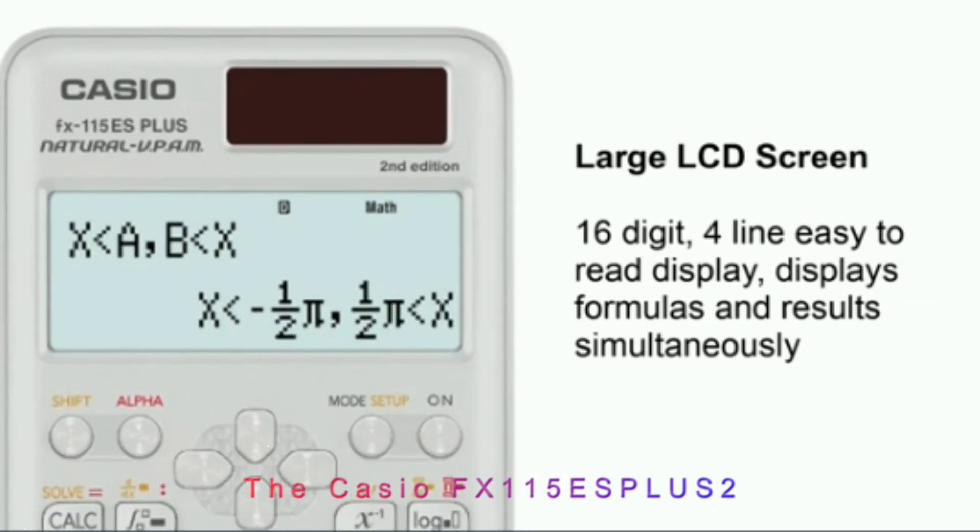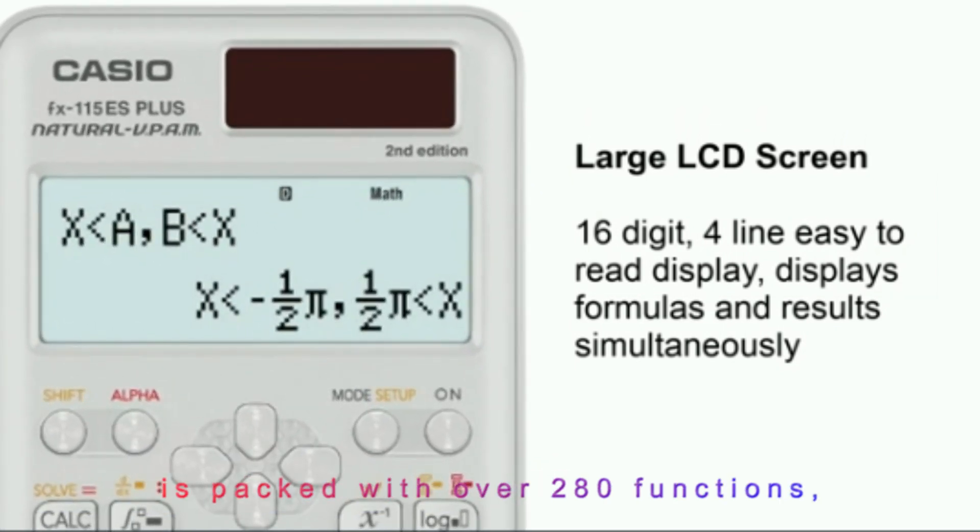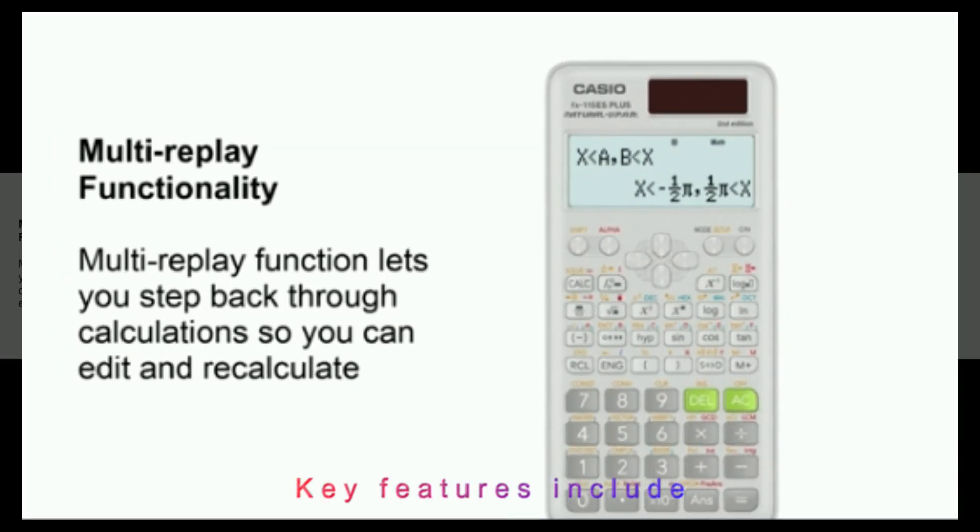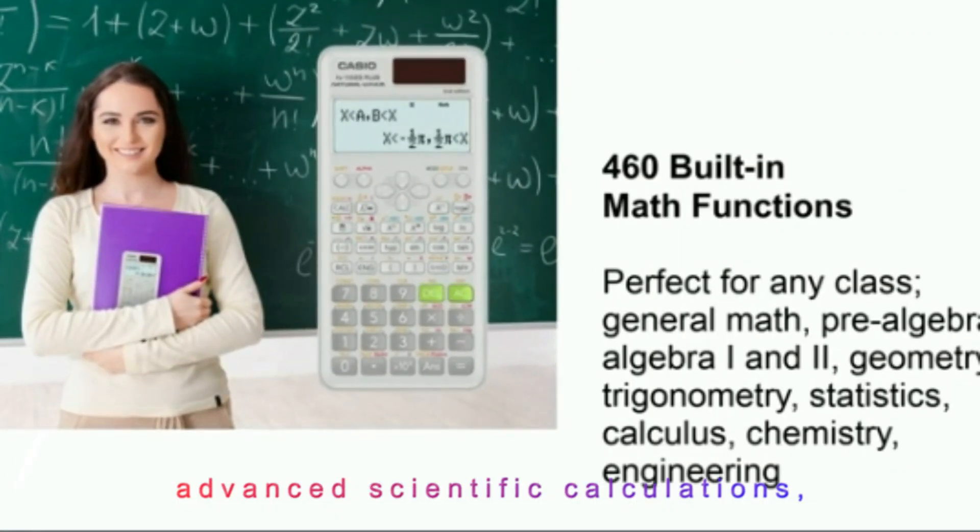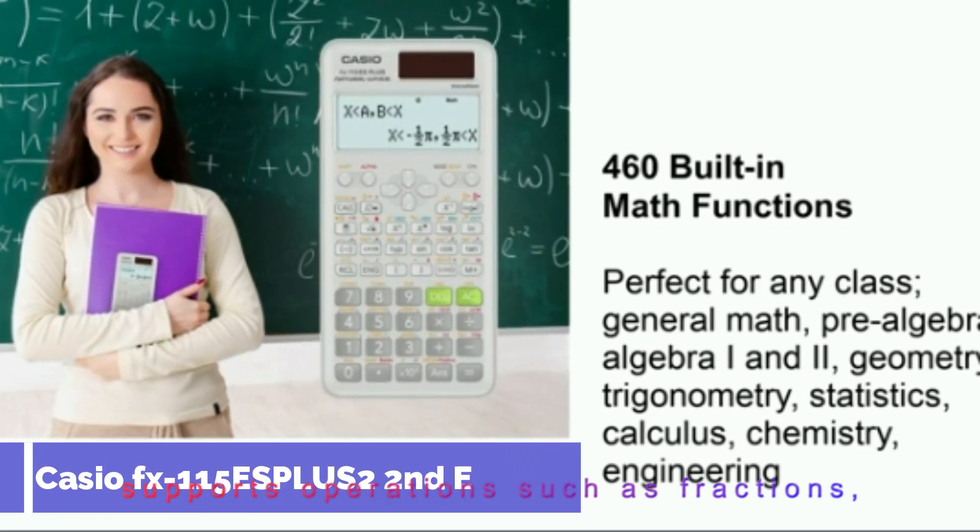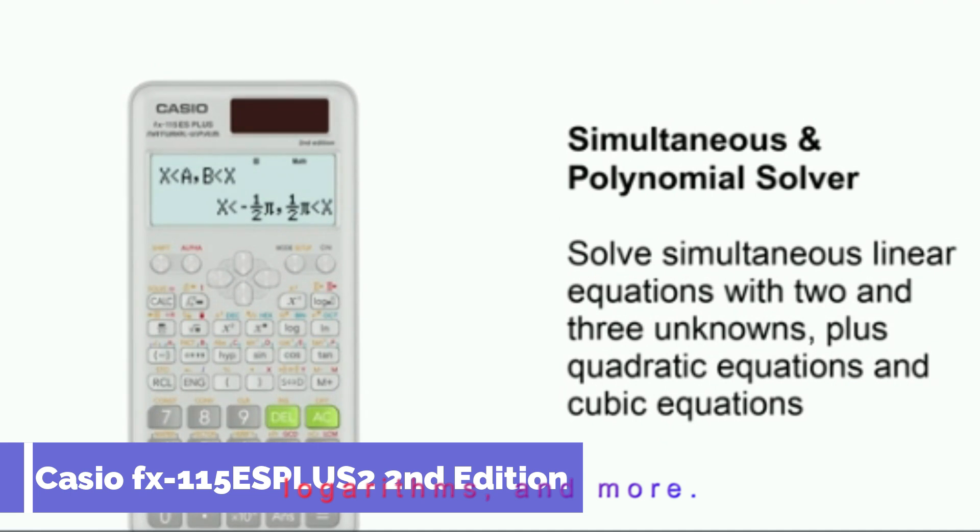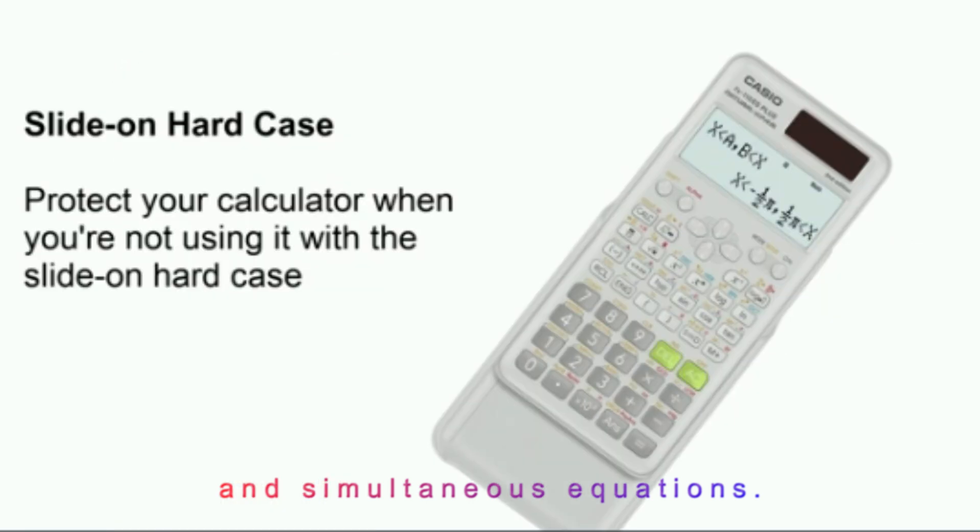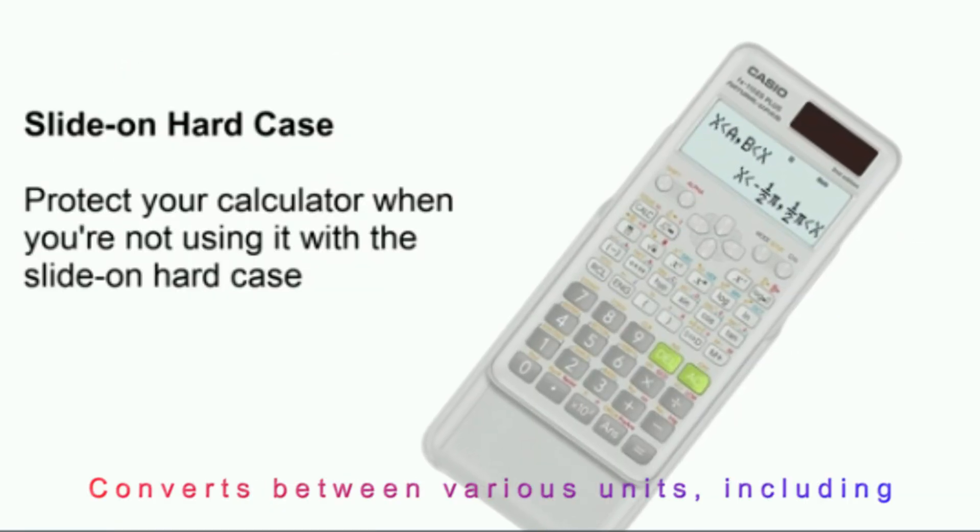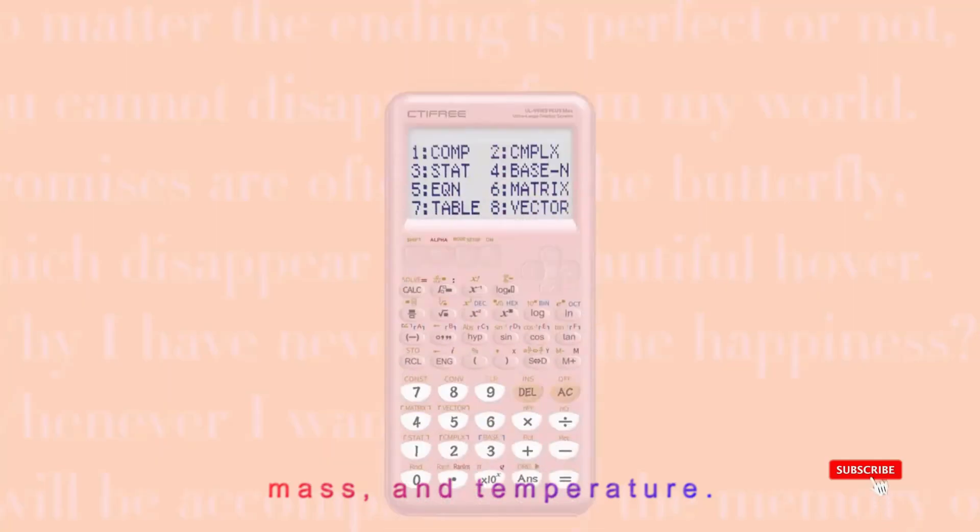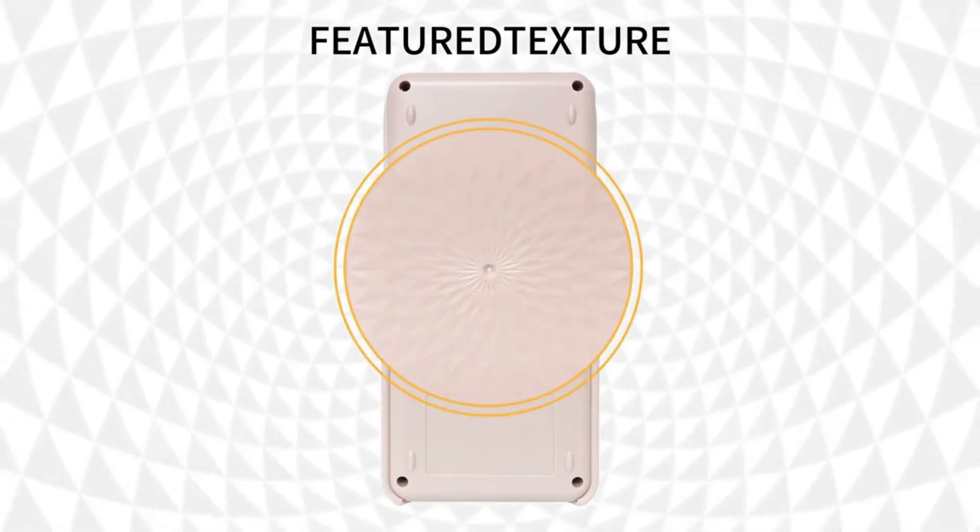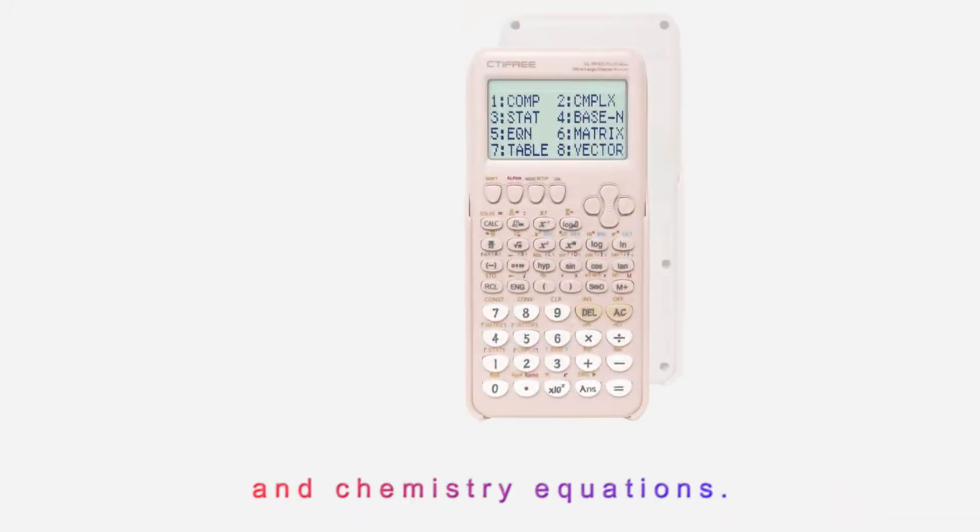The Casio FX115ESPLUS2 is packed with over 280 functions, providing everything you need for performing advanced math calculations. Key features include advanced scientific calculations, supports operations such as fractions, statistics, trigonometric functions, logarithms, and more. Equation solver solves linear, quadratic, and simultaneous equations. Unit conversions convert between various units, including angles, length, mass, and temperature. Random number generator is a great feature for probability and statistics problems. Multi-variable calculations include various constants for physics and chemistry equations.